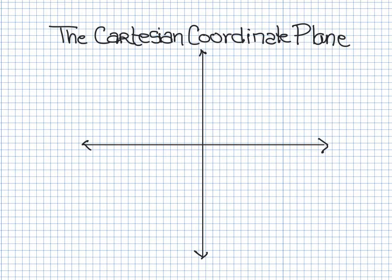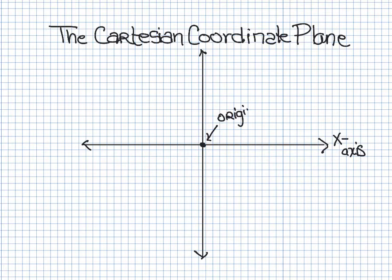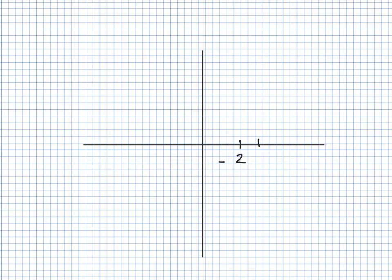First, there is a number line that's horizontal, the way we're used to — that is known as the x-axis. At the intersection of these two lines is where we see zero, which we also call the origin, because it's where we start counting. From there, as we go right, we get larger and larger — one, two, three — and it gets positive as we go off to the right.